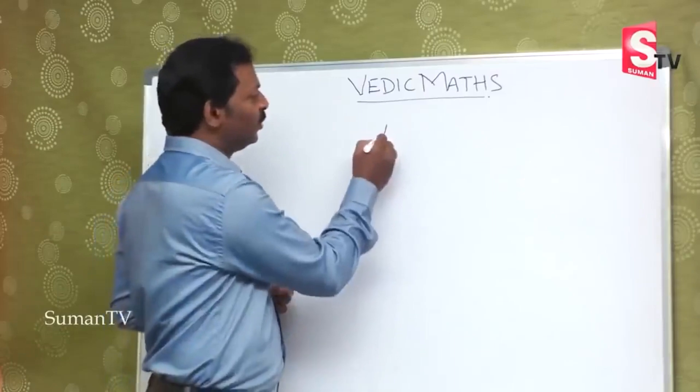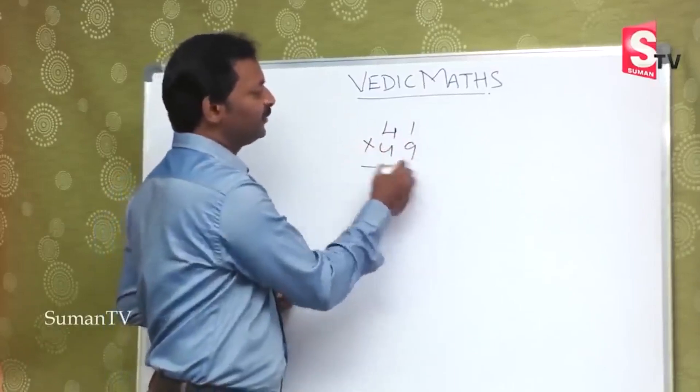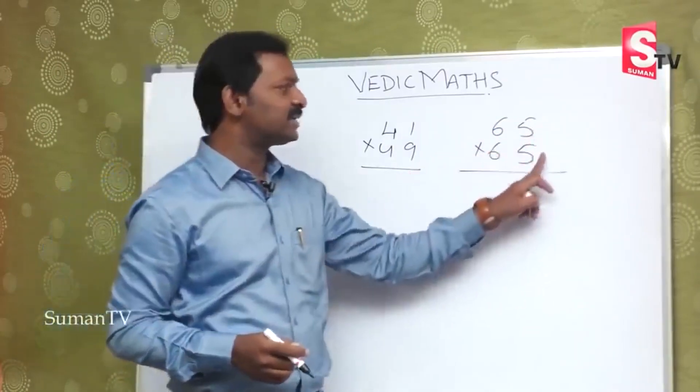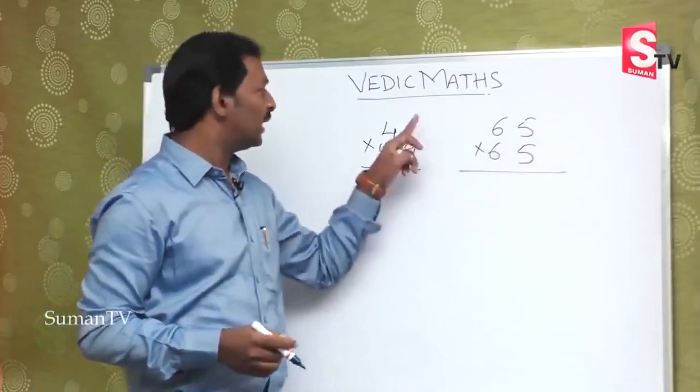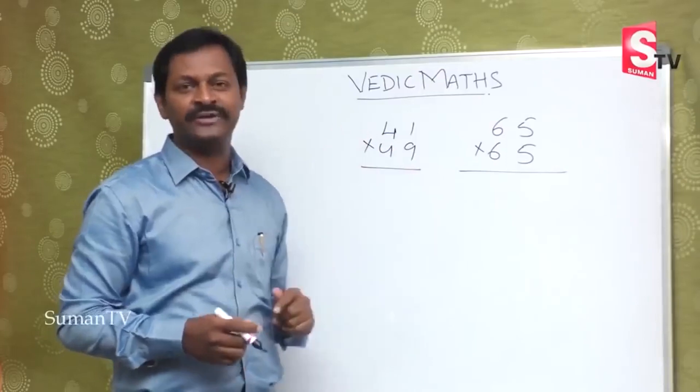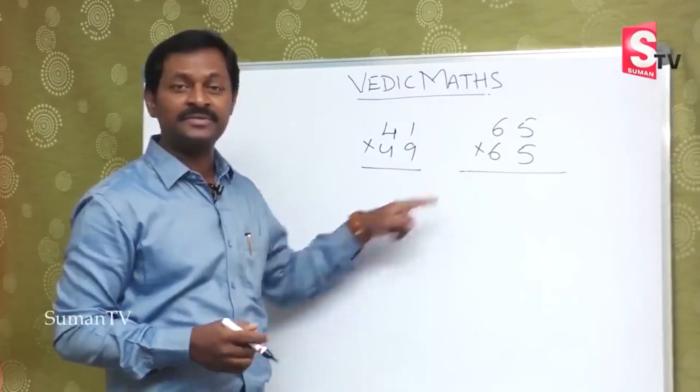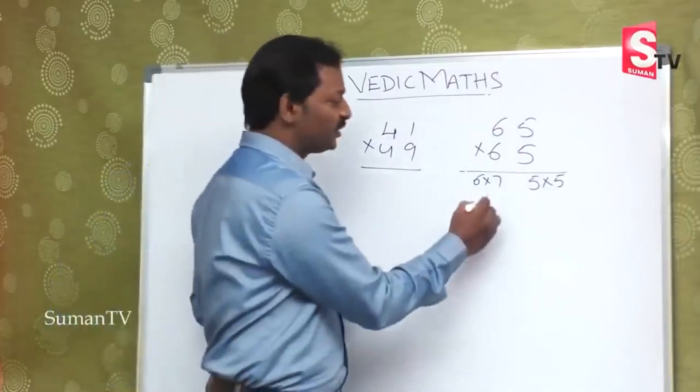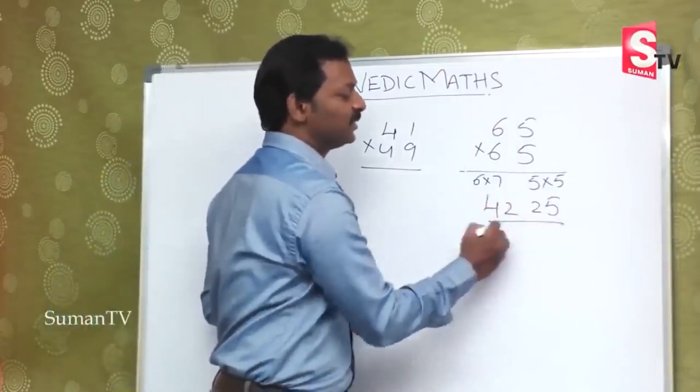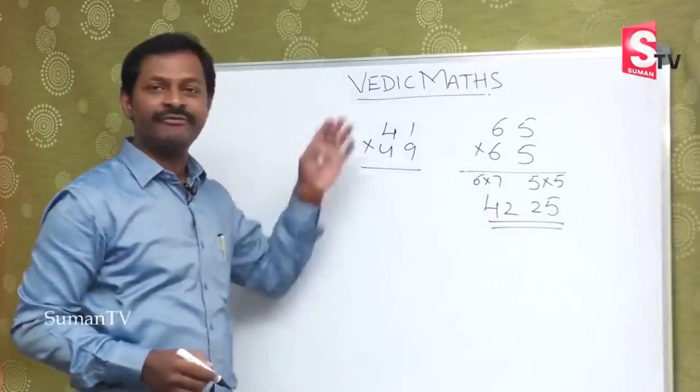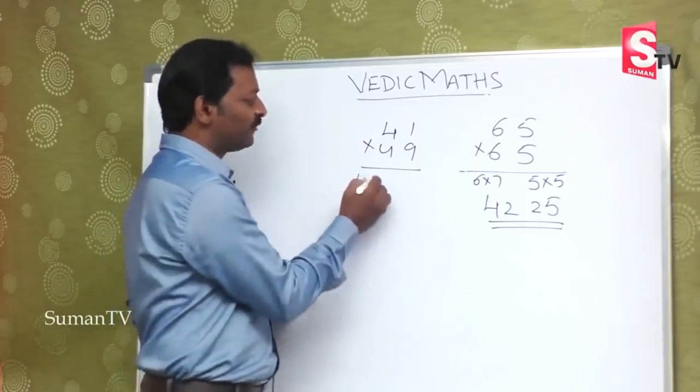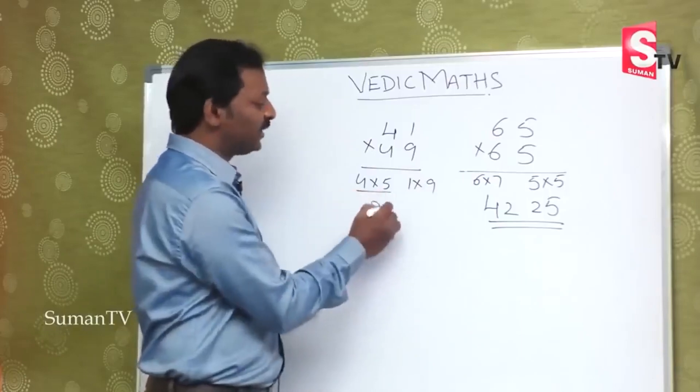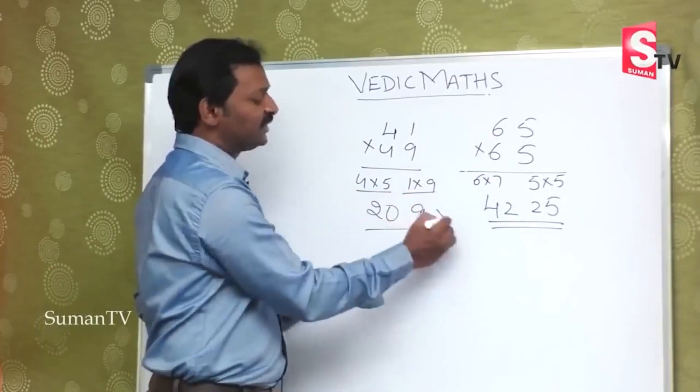Suppose if you get a number 41 multiplied by 49, or 65 multiplied by 65. You can see units place here 5 and 5 makes 10, and 1 and 9 also 10. 6 and 6, so 6 into 7, and here 5 into 5. So 6 times 7 is 42, and 5 times 5 is 25. The answer is 4225. 4 and 4, so 4 into next number 5, and 1 times 9 is 9. 4 times 5 is 20, and 1 times 9 is 9, which gives the wrong answer 209.